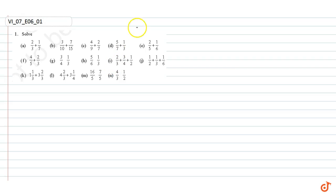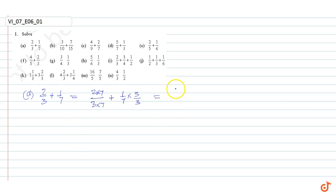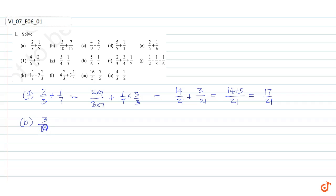In this question we have to add the following fractions. Part a: 2/3 plus 1/7. LCM is 21. So 2/3 into 7/7 plus 1/7 into 3/3, which is equal to 14/21 plus 3/21, equal to 14 plus 3 divided by 21, equal to 17/21.